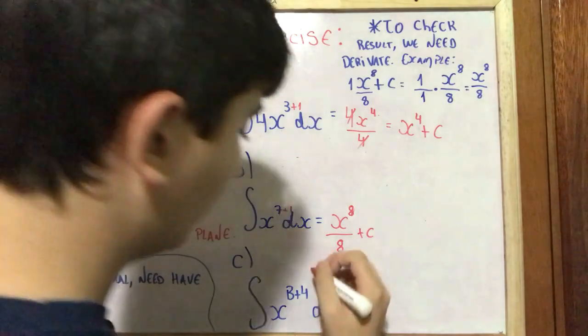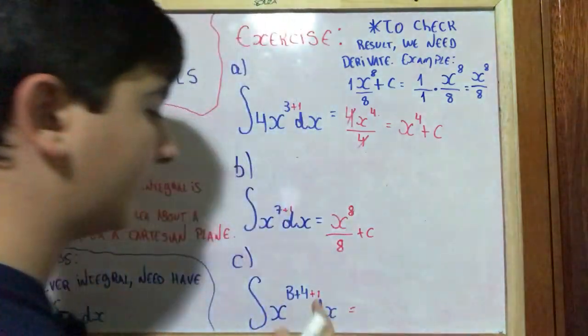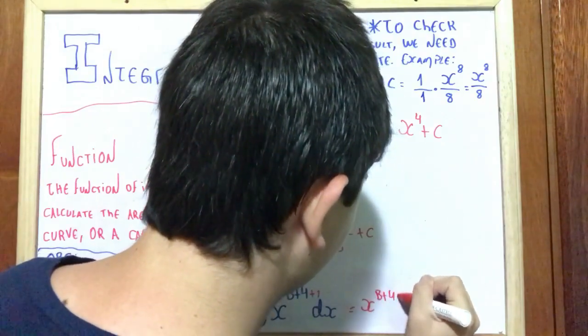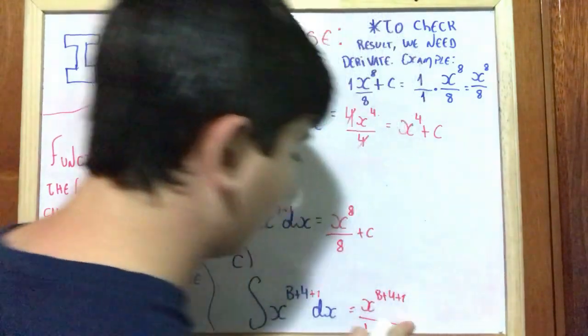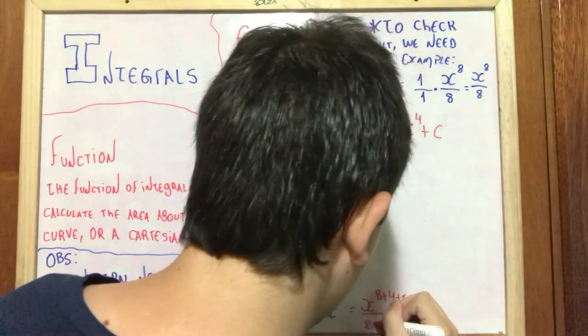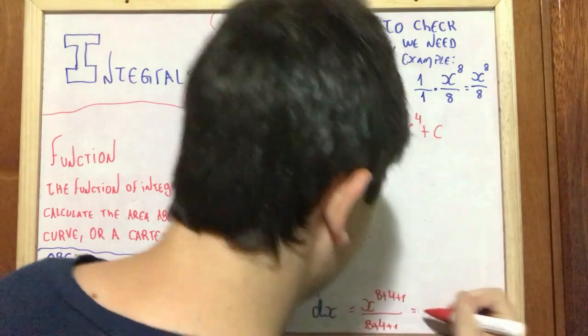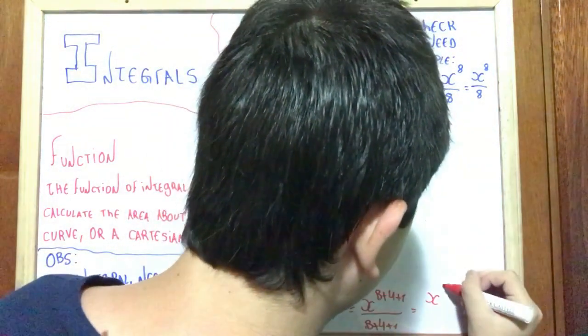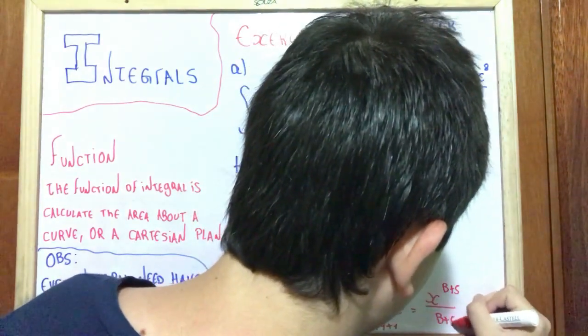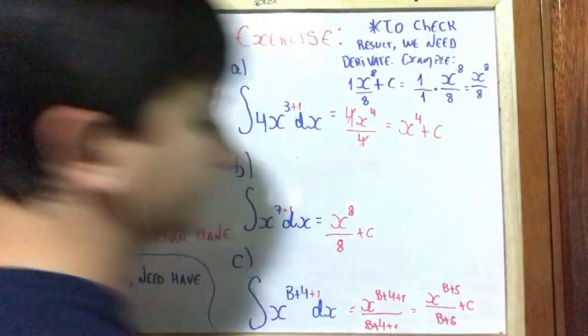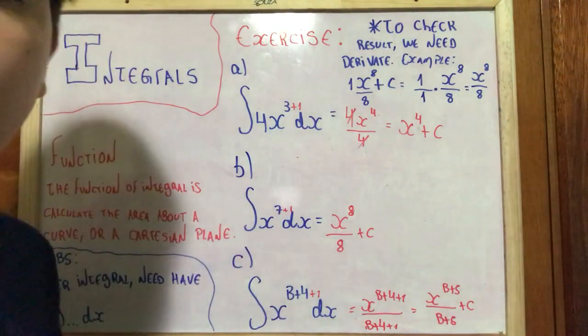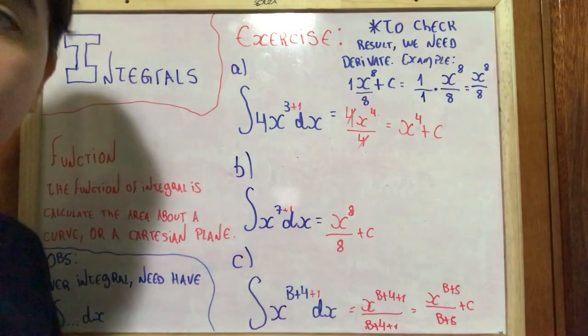What we do? We put plus 1, equal X^(B+4+1) divided by B+4+1, and we have X^(B+5) divided by B+5 plus constant. It's very easy, this integral. There are a lot of integrals more difficult, but this integral is very easy.